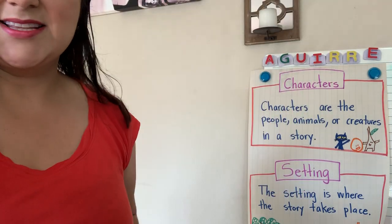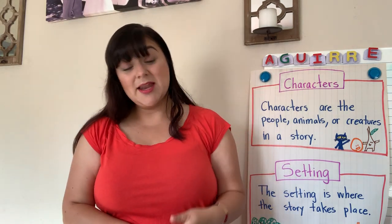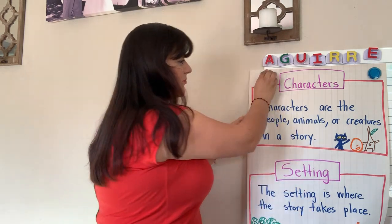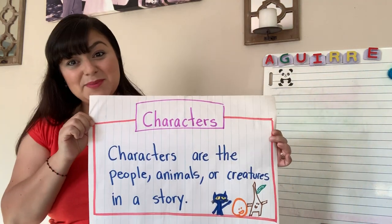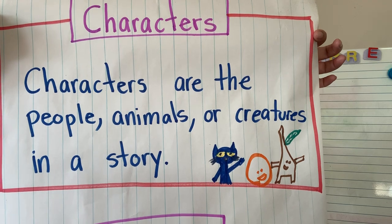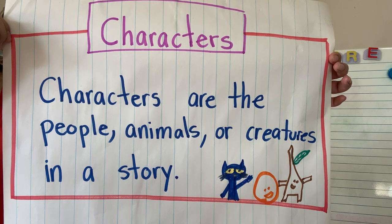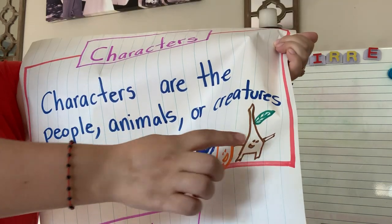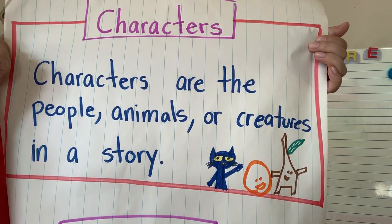Let's get started. I made an anchor chart for us so that we can remember what characters are. Characters are the people, animal, or creatures in a story. For example, when we read Stick and Stone, the characters were Stick and Stone — those were the creatures in the story.